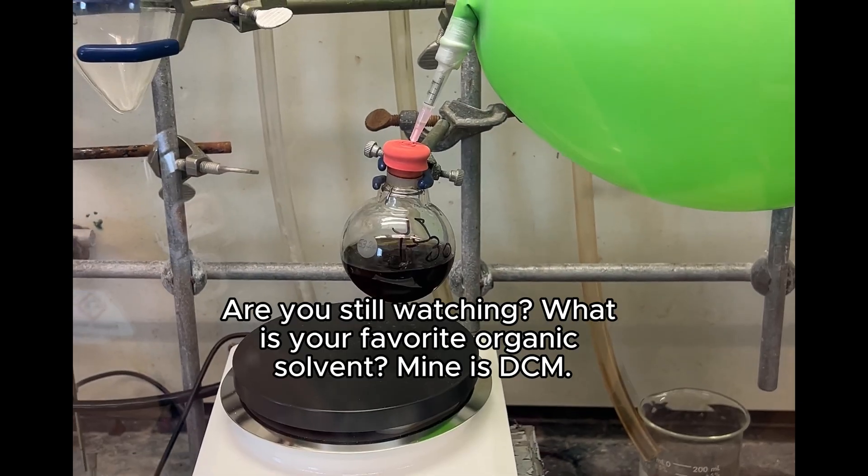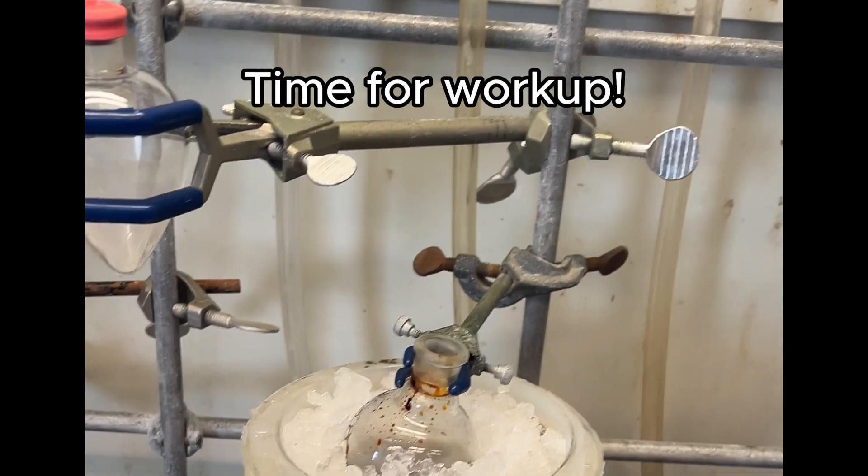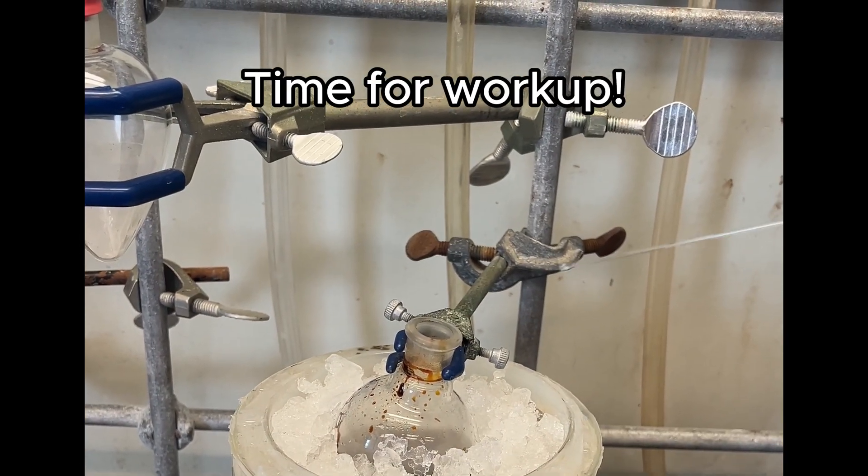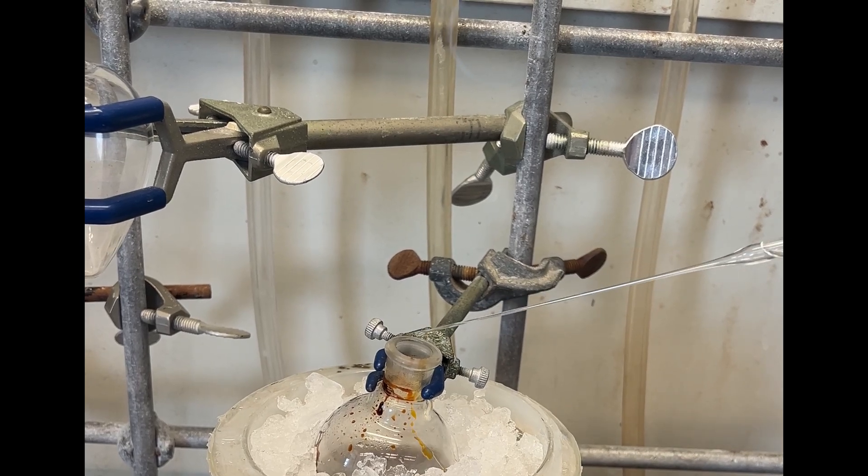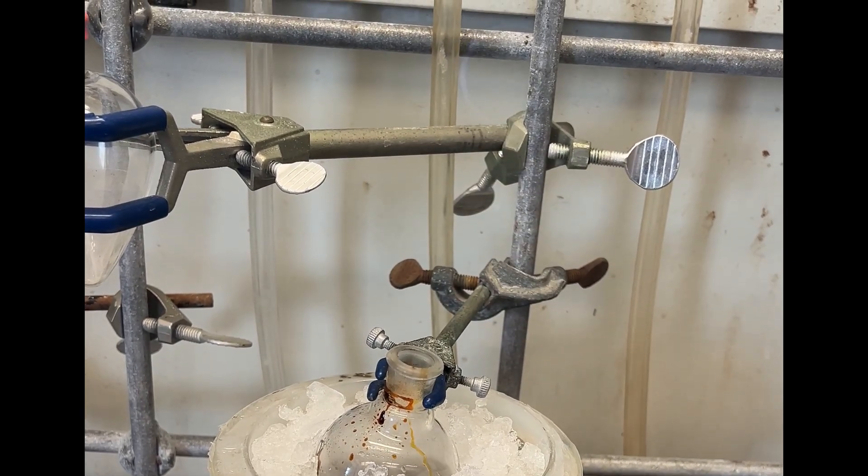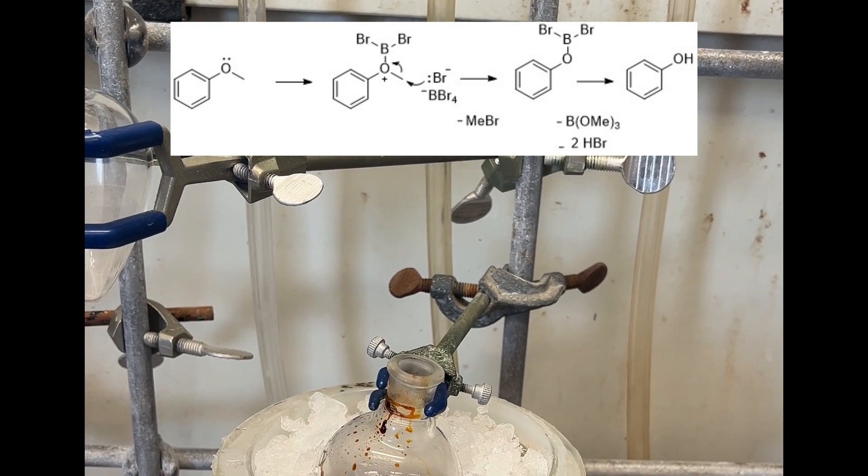So if you're still watching, what's your favorite organic solvent? Mine is DCM because it's easy to get rid of. Okay, now it's time for the workup. I'm going to be working up with methanol, very slowly at zero degrees behind your hood sash. You're going to do this with a long pipette, one drop every minute.